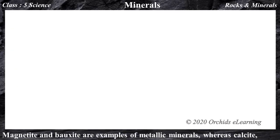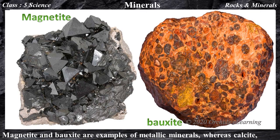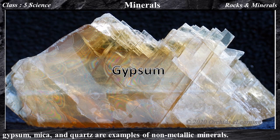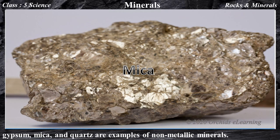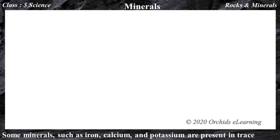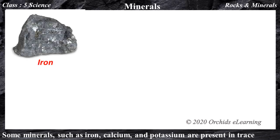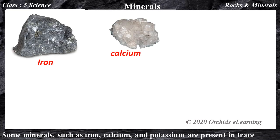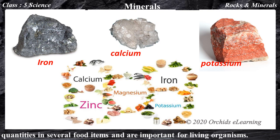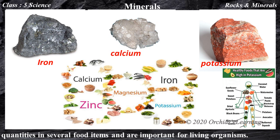Magnetite and bauxite are examples of metallic minerals, whereas calcite, gypsum, mica, and quartz are examples of non-metallic minerals. Some minerals, such as iron, calcium, and potassium, are present in trace quantities in several food items and are important for living organisms.